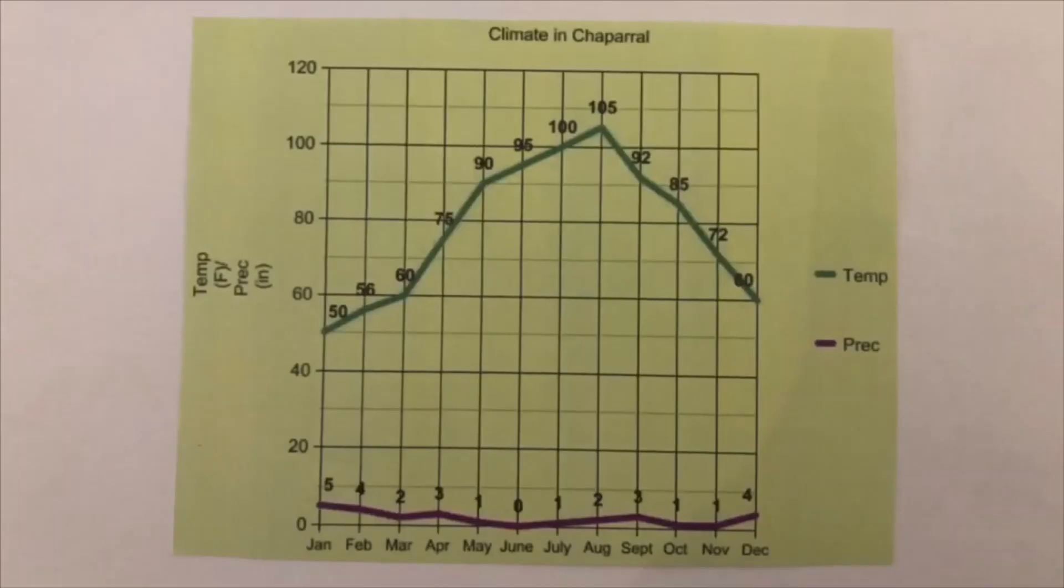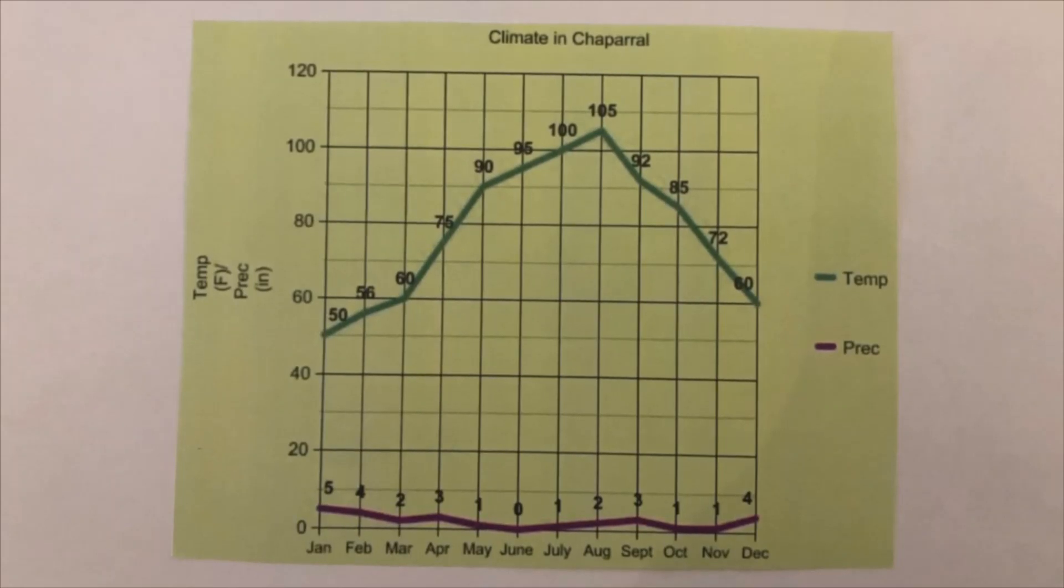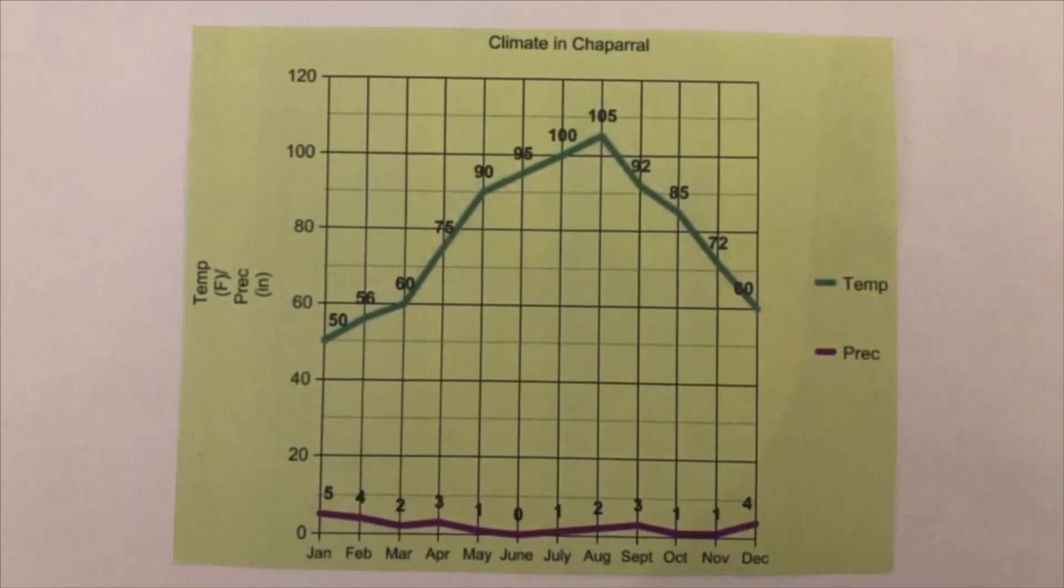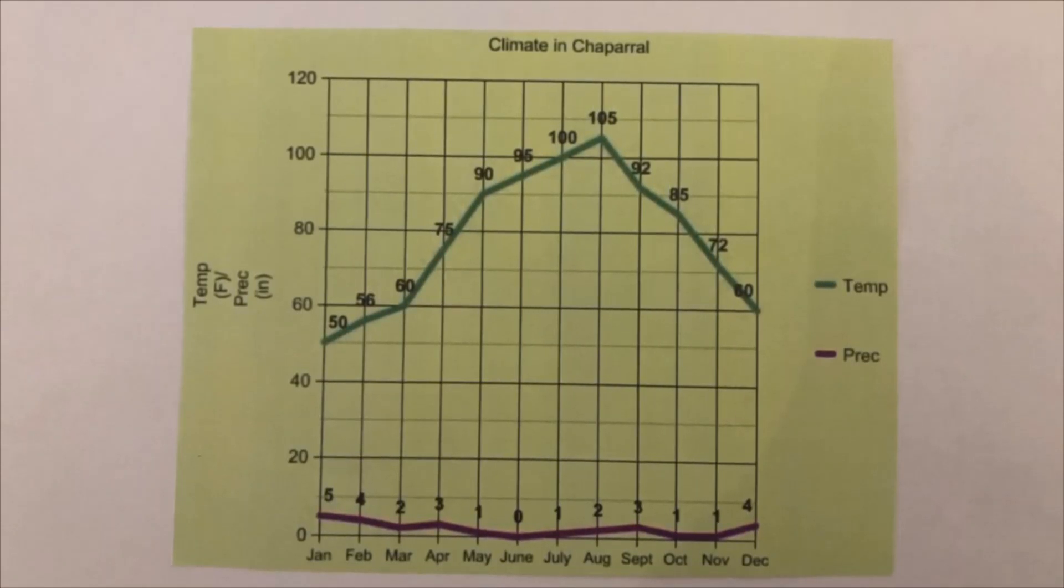This graph shows the climate. The green line shows the changing temperatures all year through. It starts cold and then becomes really hot, then back to cold. The purple line shows the low precipitation.